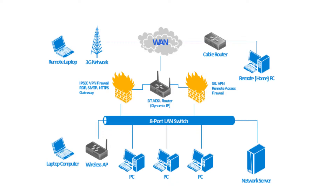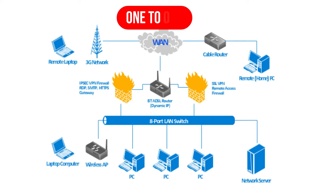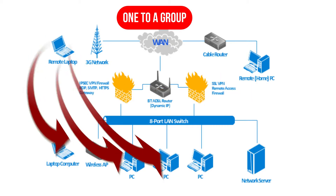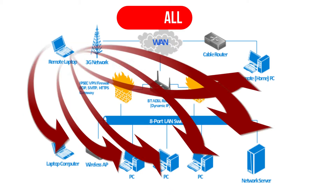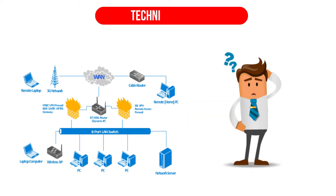Let's start with the topic of today. In networks, the devices can communicate in three ways: one to one, one to a group, and one to all. But let's see how each type of communication is called.